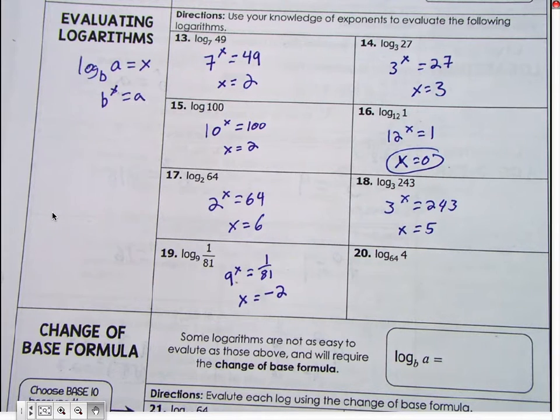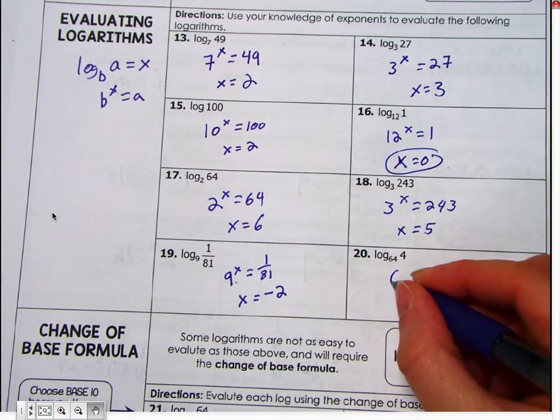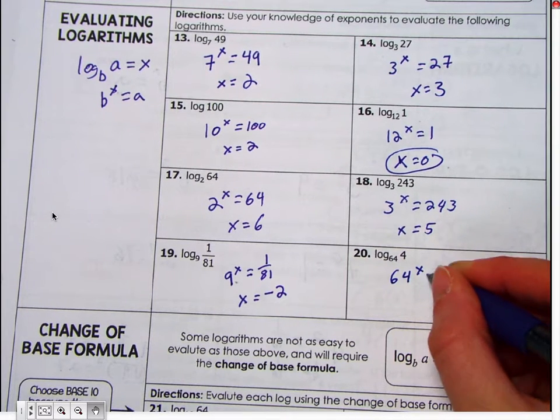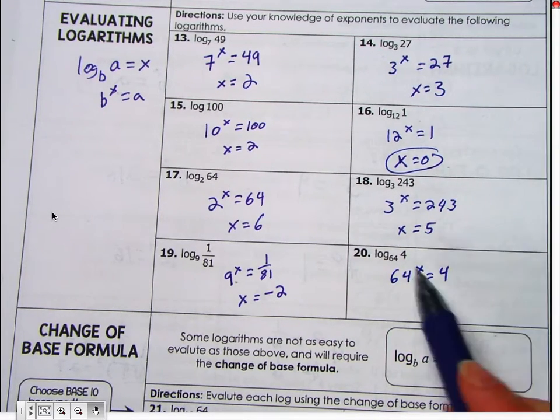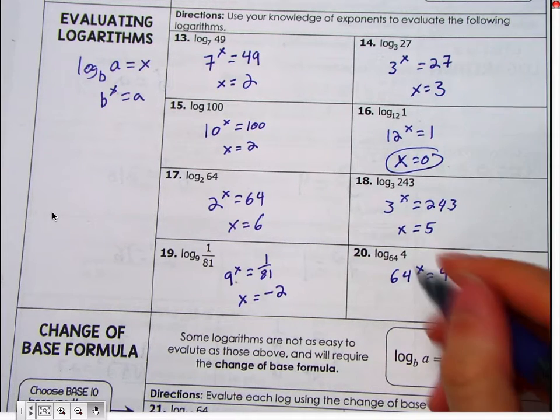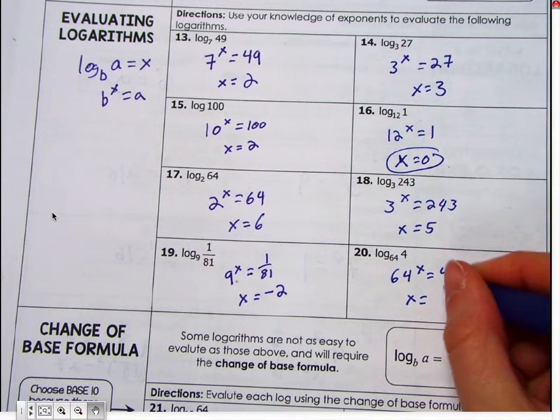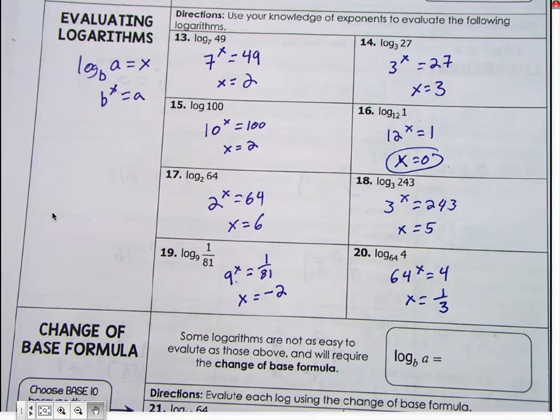Okay. Number 20, we're going to write two to the log base 2 of 4. Just be careful that it's not times x, it's two to x. Okay. So x equals five. Yes.